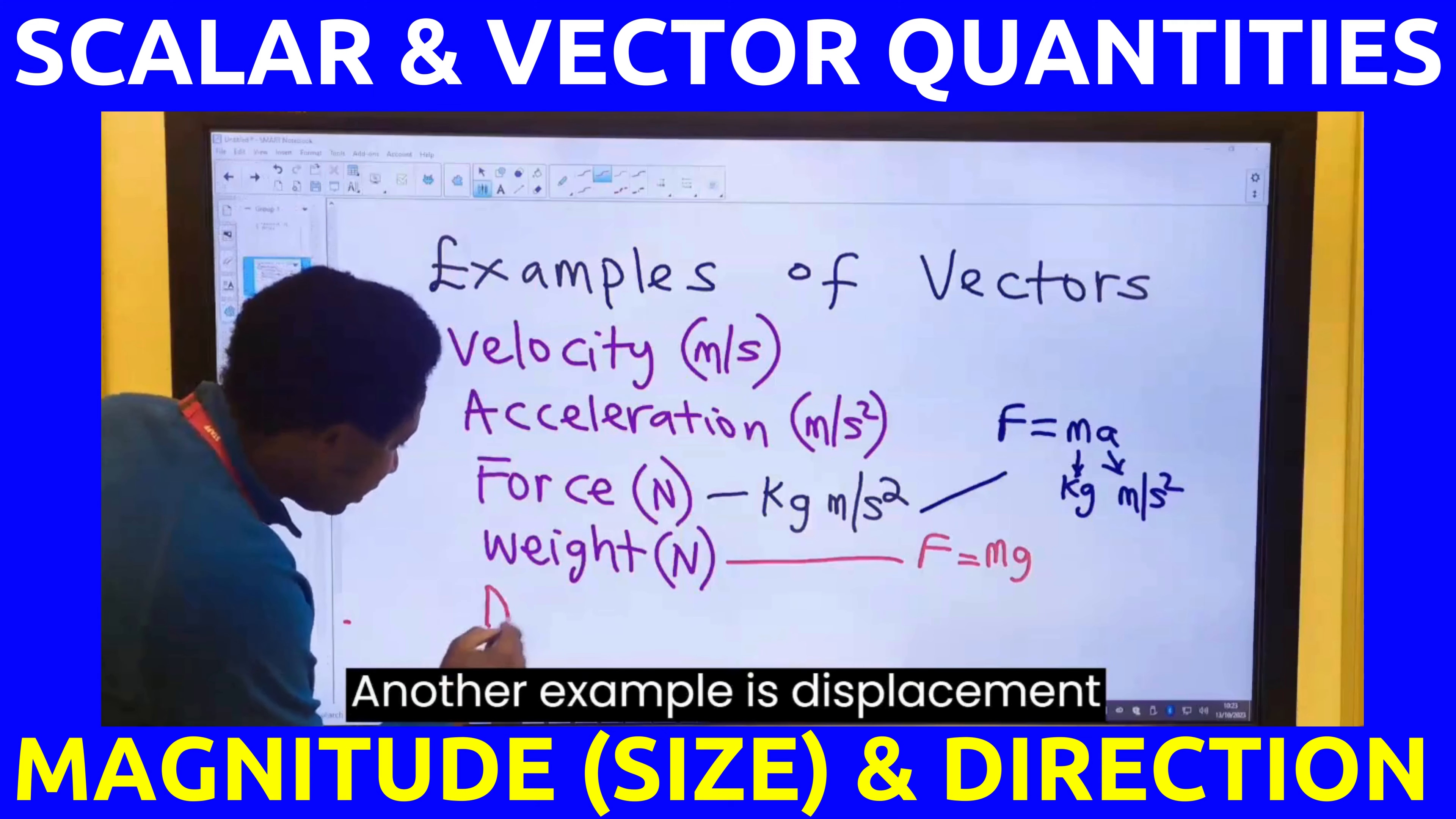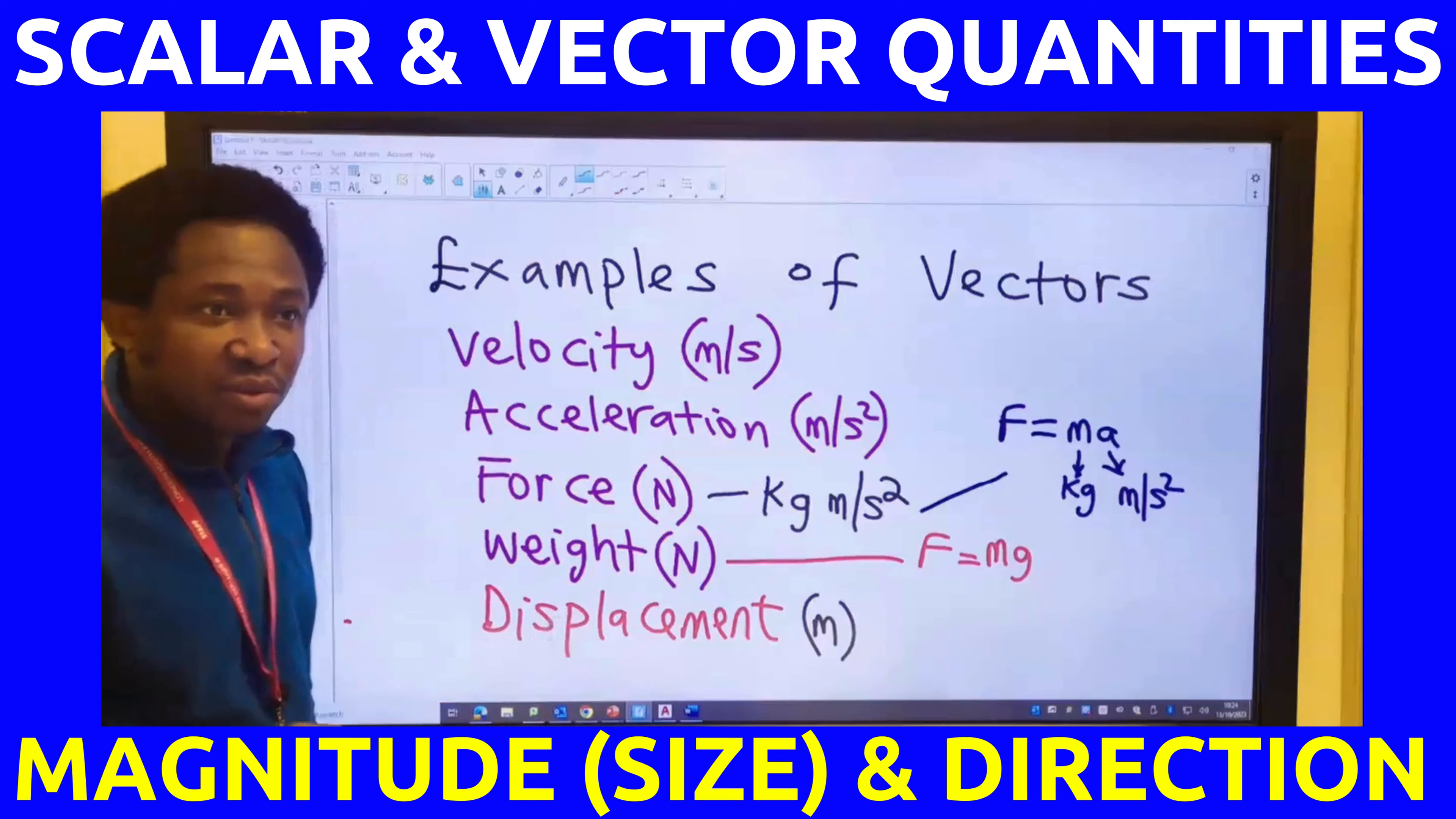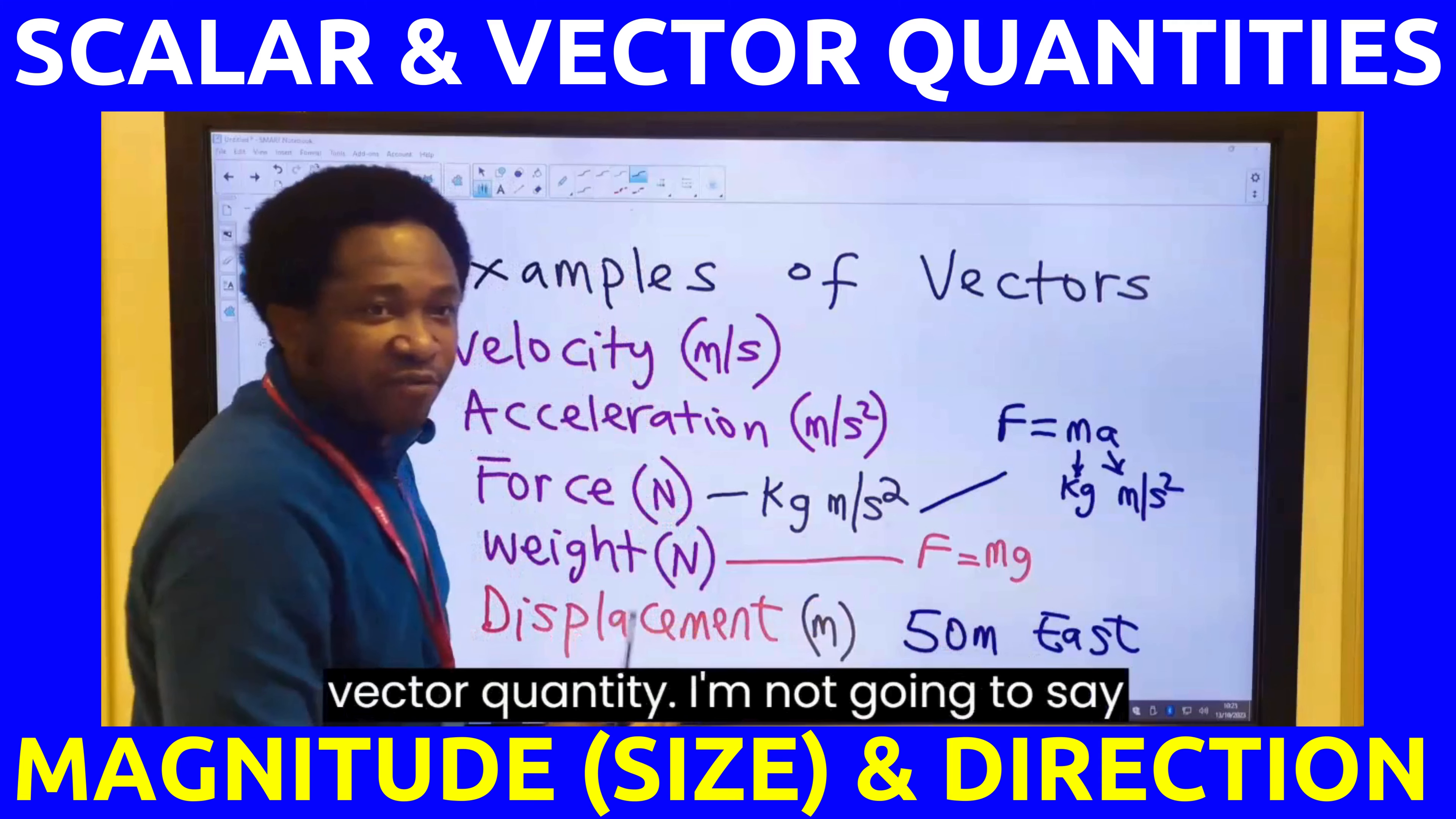Another example is displacement meters. But do you know that meters is a length? Length is a scalar quantity. How come displacement is also meters but is vector? Someone ran 50 meters east. I mentioned meters, which is a scalar quantity. But because I mentioned east, it's now what? A vector quantity.